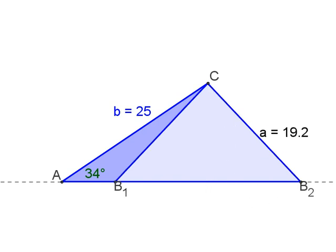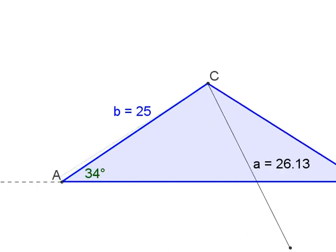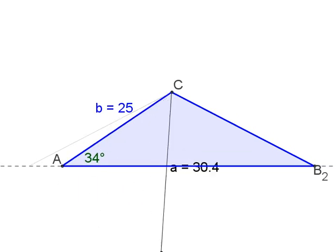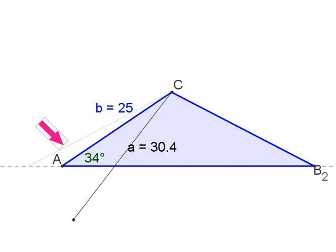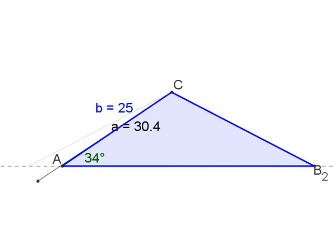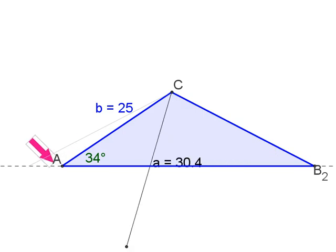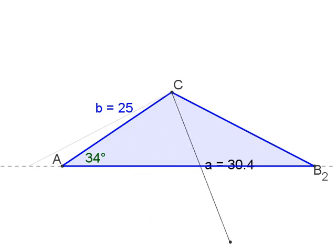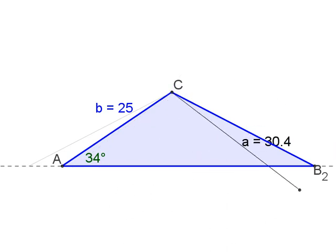But if I keep making a bigger — eventually bigger than little b, that 25 length — we re-enter unambiguous territory. The grayed-out leg on the other side would make angle A an obtuse angle: 180 − 34 = 146 degrees, which contradicts A being given as 34 degrees. So only one valid triangle exists once little a exceeds little b.